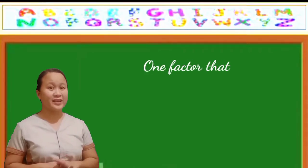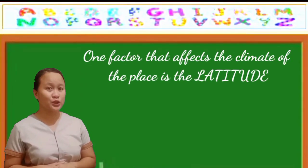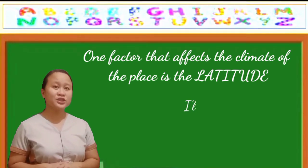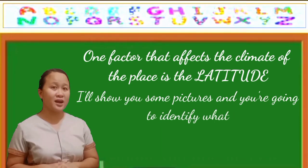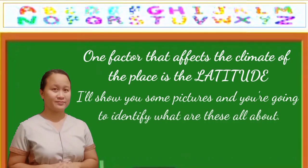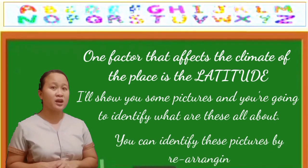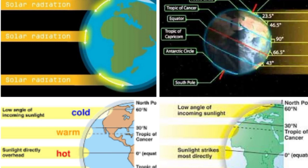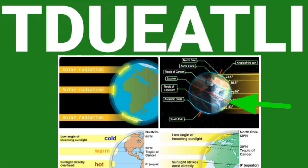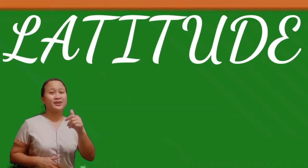One factor that affects the climate of a place is latitude. I'll show you some pictures and you're going to identify what they are about. You can identify these pictures by rearranging the jumbled letters. If you answered latitude, you are correct.